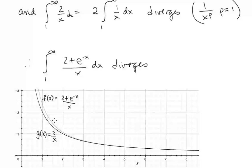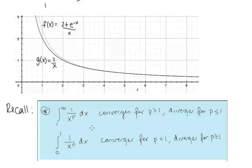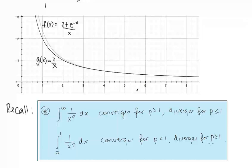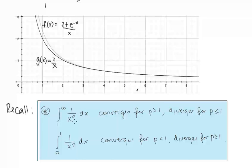Here's the visual to go with that. Recall from Lesson 15 that integrals from 1 to infinity of 1/x^p converge for p > 1 and diverge for p ≤ 1. And integrals of 1/x^p from 0 to 1 converge for p < 1 and diverge for p ≥ 1. Here we were looking at 2/x, which is 2 times 1/x, and when p equals 1, either of these integrals diverges.